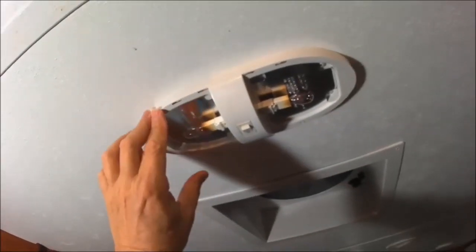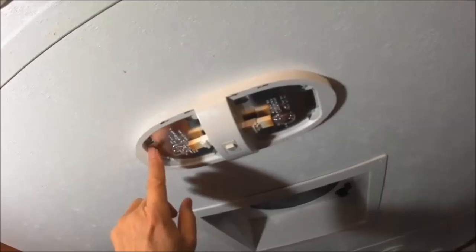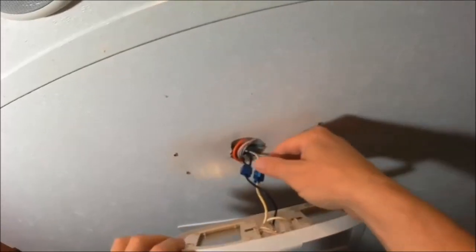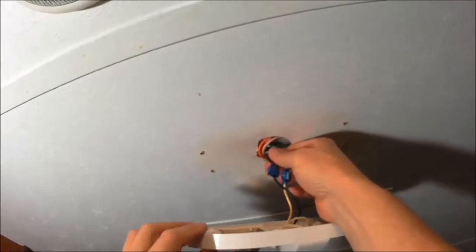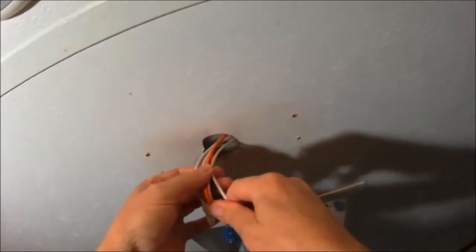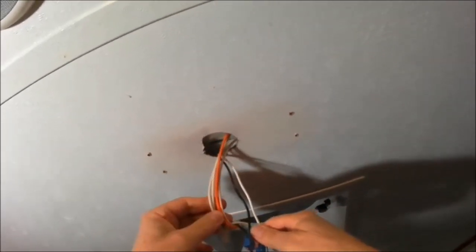The way you take this light fixture off is you remove these four screws. Then you carefully pull your wires out to give you enough to work with.